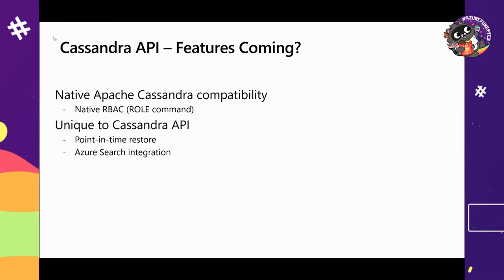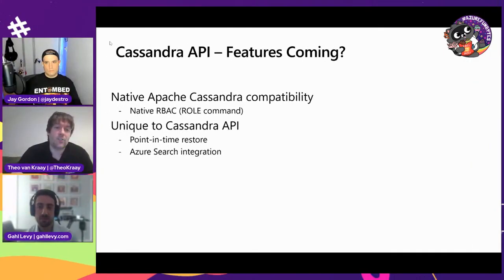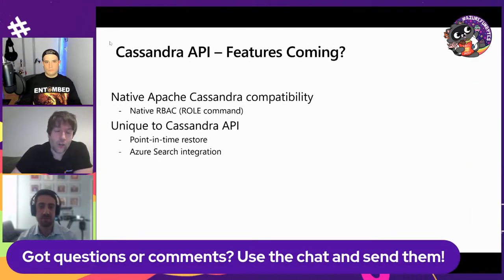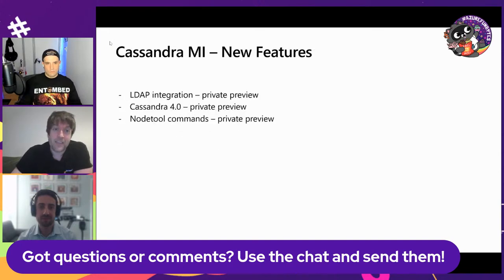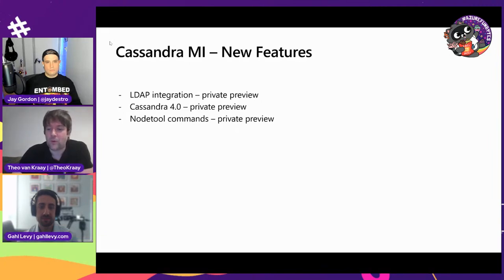We're adding feature compatibility all the time. There are also things unique to Cassandra API: point-in-time restore is a feature in the platform we're surfacing in the API, and we're working on a public Azure Cognitive Search integration as well. And then there's Cassandra managed instance, which I'll probably talk about a little bit more later.